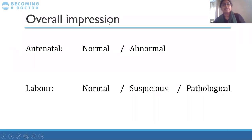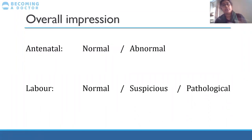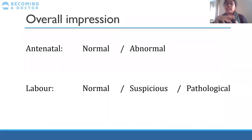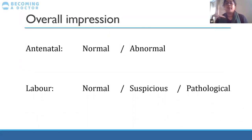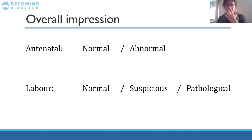The overall impression: in an antenatal CTG, you say either normal or abnormal. In labor, the CTG is classified as normal, suspicious, or pathological. If you have a pathological trace that is not recovering, that's when you need urgent intervention.